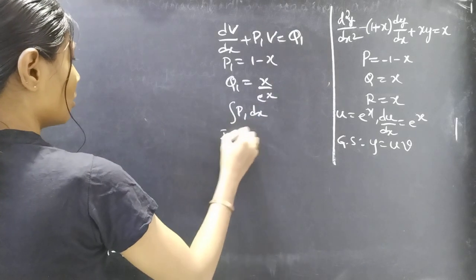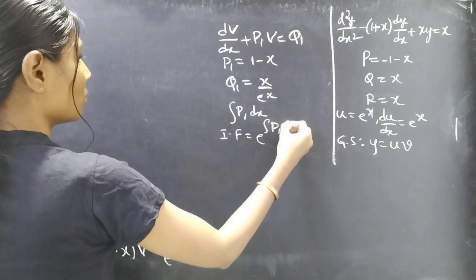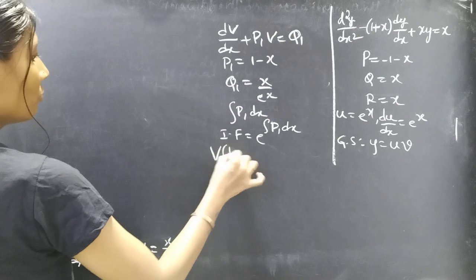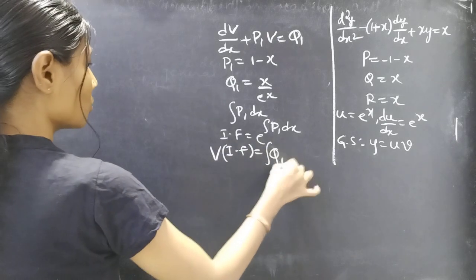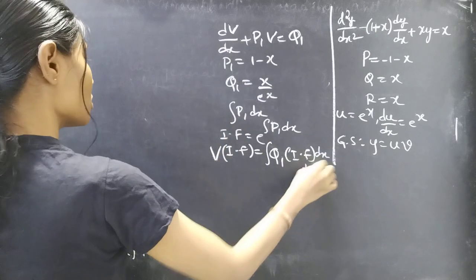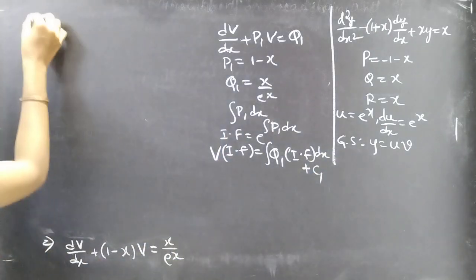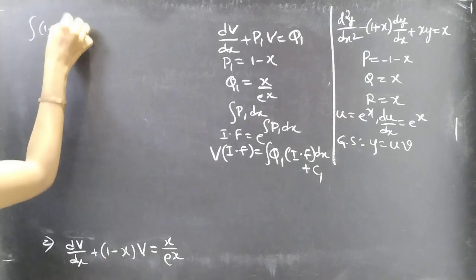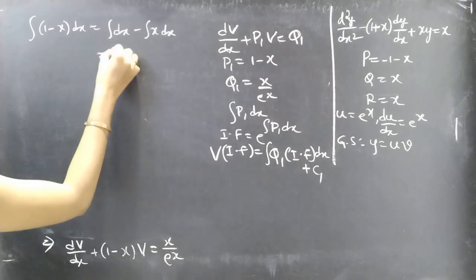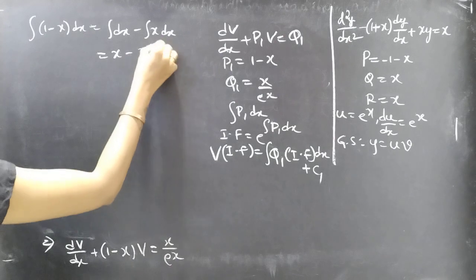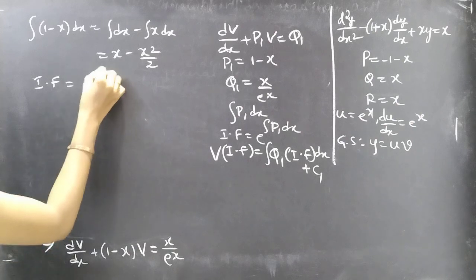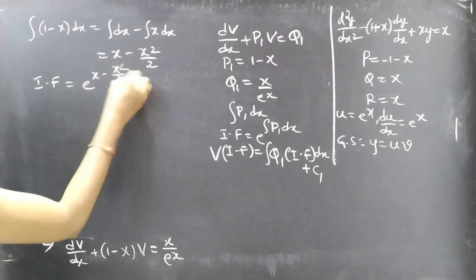We need to find ∫P₁ dx, then the integrating factor = e^(∫P₁dx), and use the general solution formula: V · (I.F.) = ∫Q₁·(I.F.) dx + C₁. Now ∫P₁ dx = ∫(1-x) dx = x - x²/2. So the integrating factor is e^(x - x²/2).